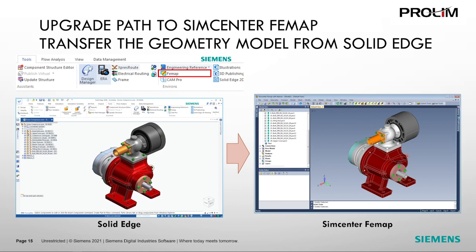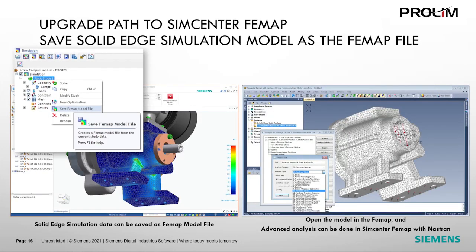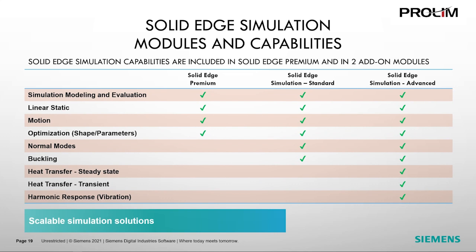FEMap has extensive CAD model cleanup tools and in-depth functionality for mesh creation and editing. FEMap can also work well with orphan meshes. The complete geometry and finite element models with boundary conditions and results can be seamlessly transferred from Solid Edge to FEMap by saving the simulation model as a FEMap file. Advanced simulation types such as non-linear analysis become easily accessible without losing any work done inside Solid Edge Simulation. The scalable packaging allows companies to select the best simulation tools — whether linear static, vibration, or heat transfer — saving money by choosing the appropriate configuration.